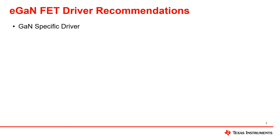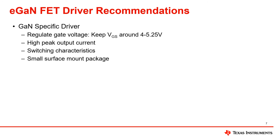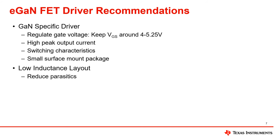To take advantage of GAN technology benefits, it is important to use a GAN-specific driver in combination with the GANFET. We recommend choosing a driver that can keep VGS around 4 to 5.25 volts depending on which parts you are using. Having high peak output currents can also help with turn-on and turn-off efficiencies. The speed of the switching characteristics is also important to keep in mind so that you can achieve the highest speeds possible in your design. Having a small surface mount package can also help you achieve better results. The layout will also play a key part in your design, as a good layout will help you reduce parasitics so that you can get the best performance out of your design.